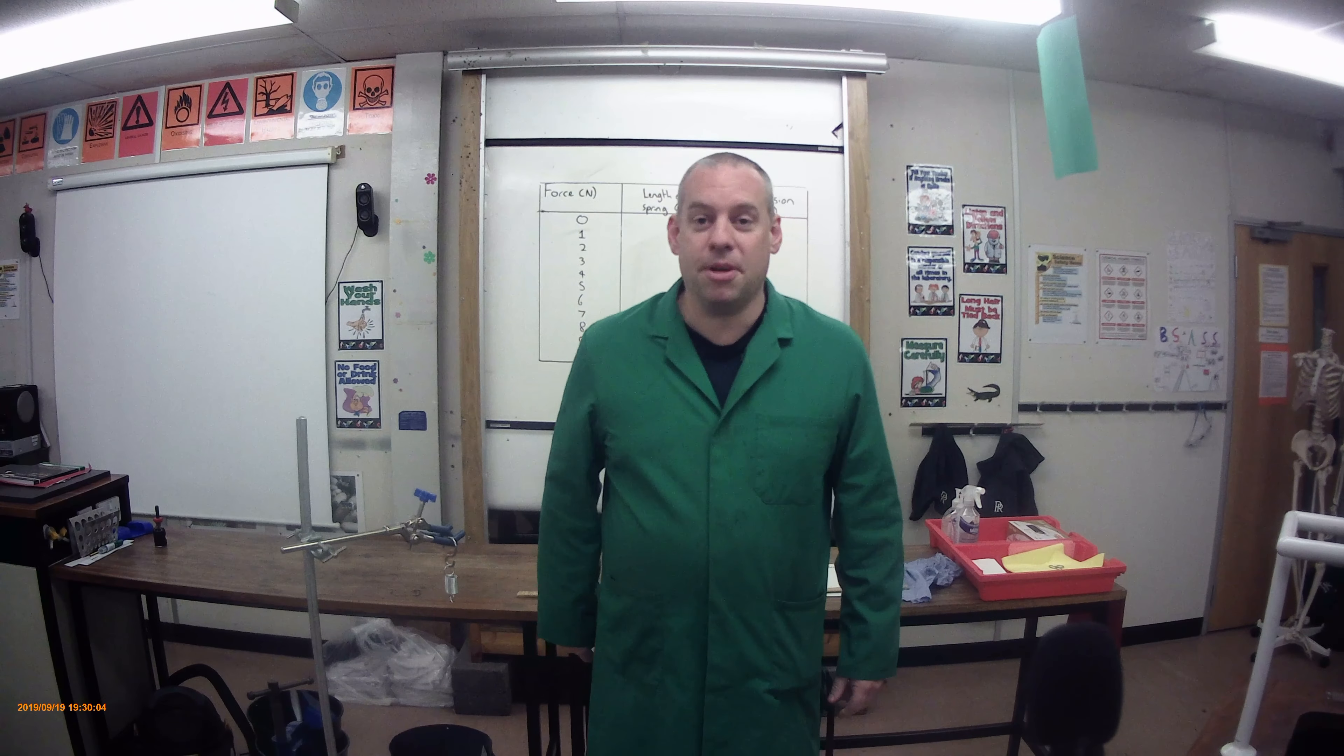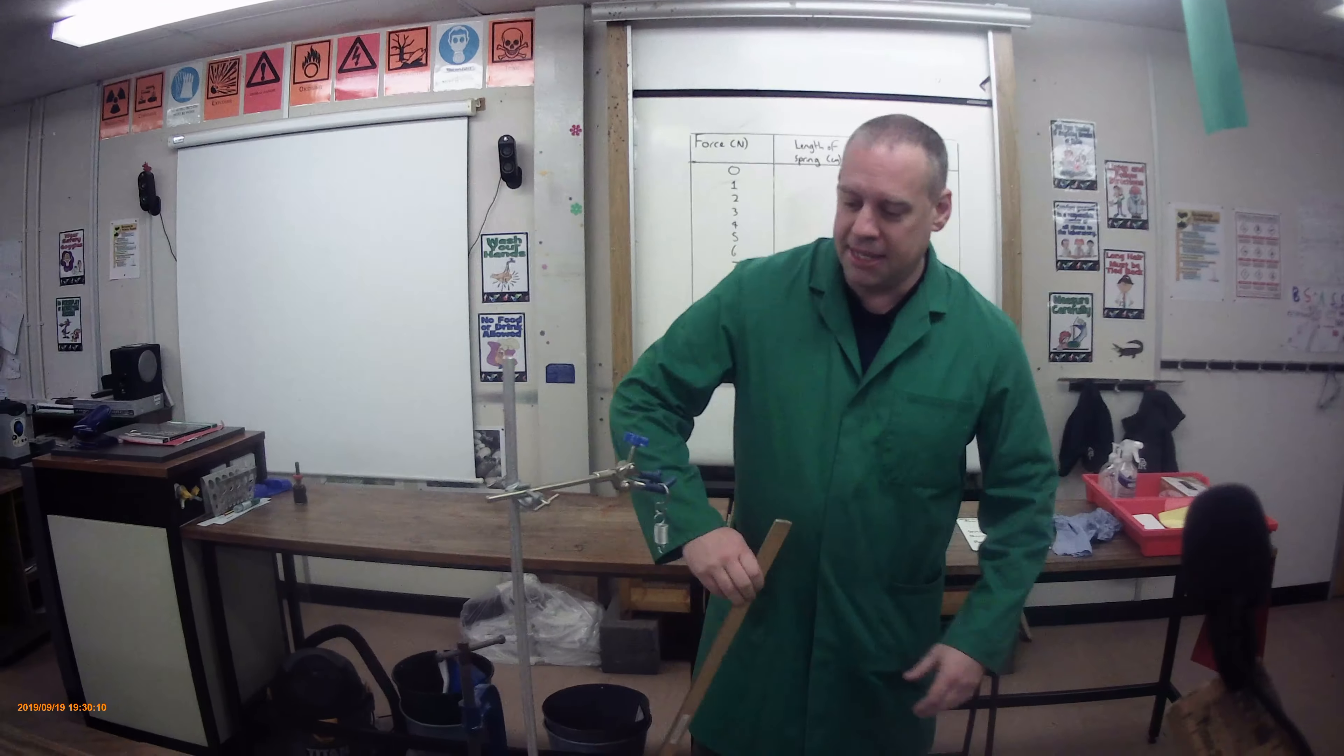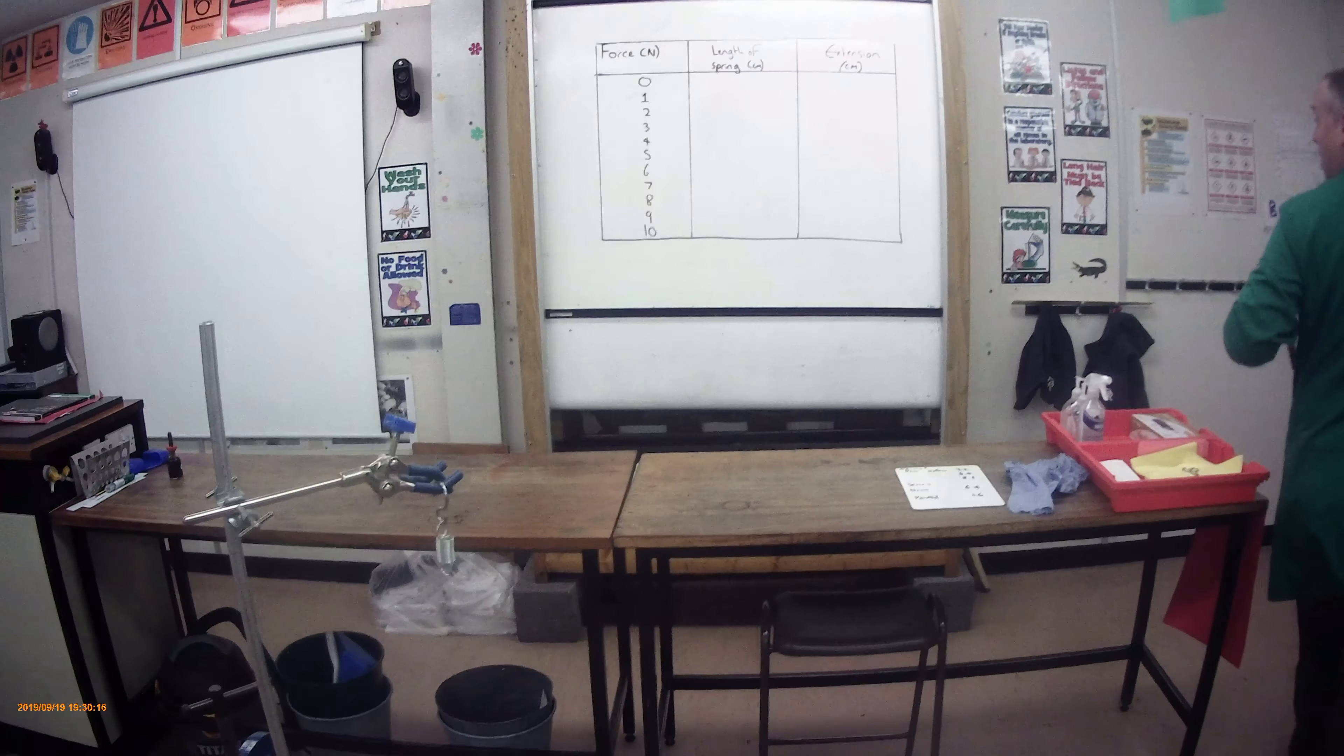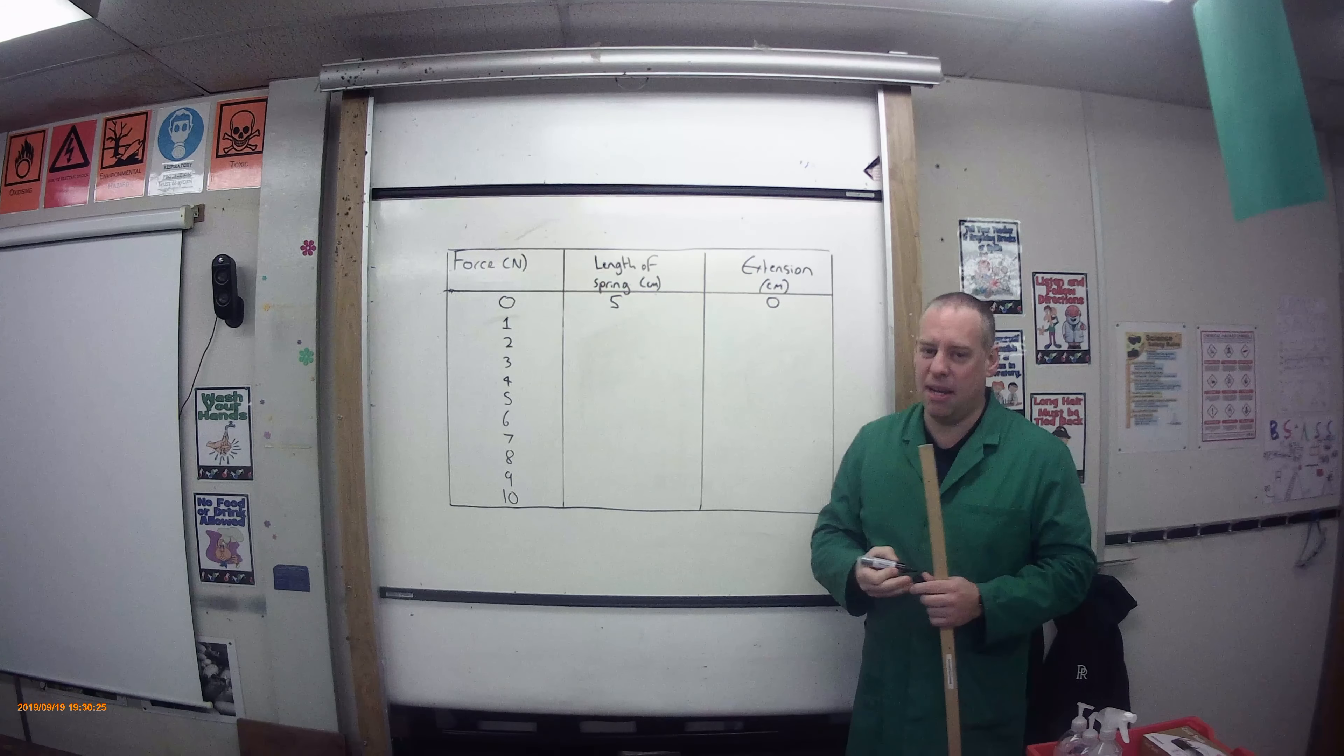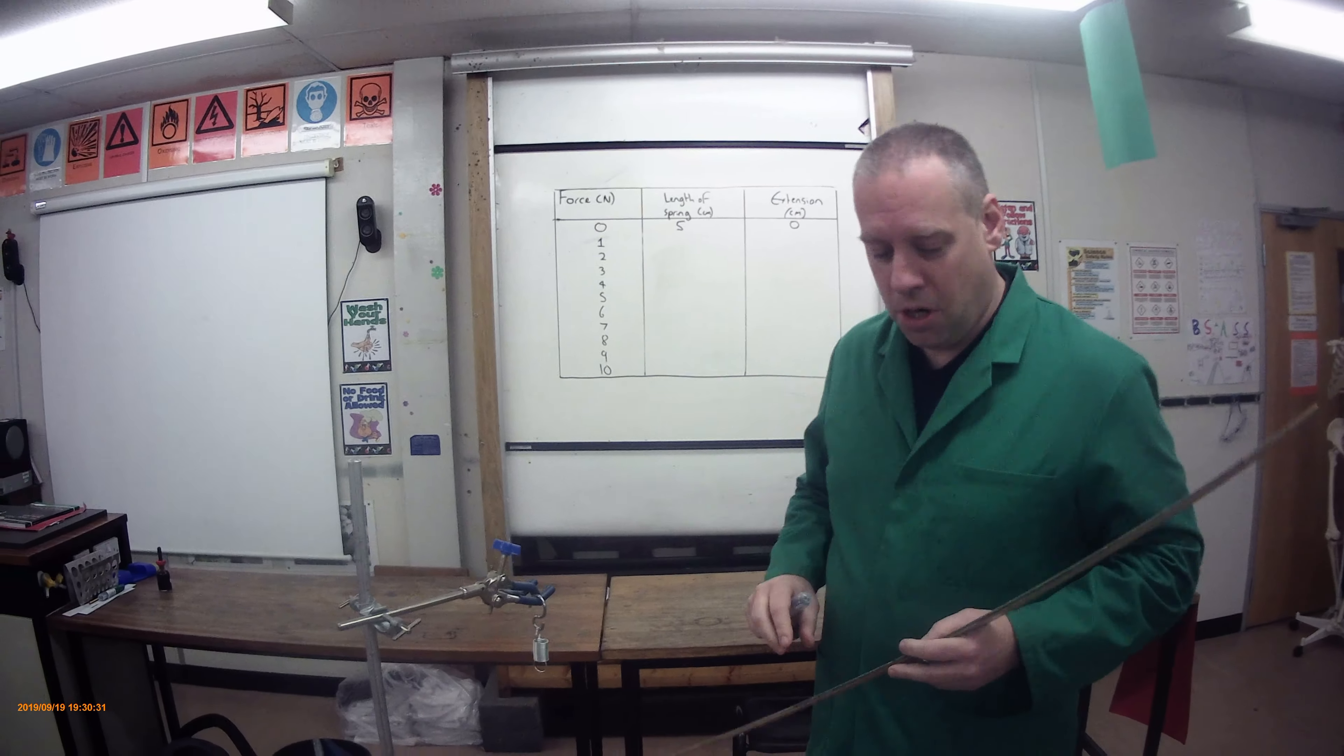So we're going to measure this and we're going to see what the extension is as I add different masses. We're going to talk about the force on that. The length of my spring is five centimeters. So I'm going to write on my little board up here, the length of my spring is five centimeters. And that means an extension of zero means it hasn't got any bigger from its original size, which sounds surprising because I haven't put any force on.